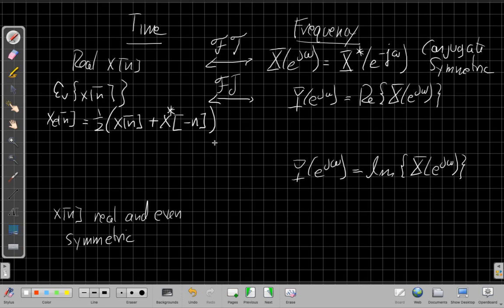And so things that are real in frequency turn out to be conjugate even in time, just like things that are real in time are conjugate even in symmetry, conjugate symmetric in frequency. Similarly, if instead of taking the real part in frequency, I take the imaginary part, so it should be j times the imaginary part, I get the odd part here.